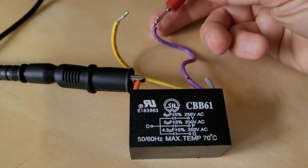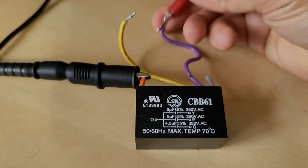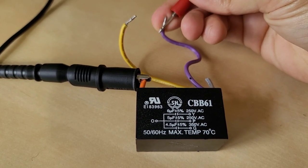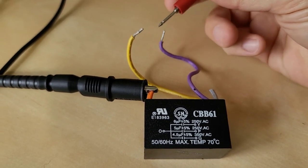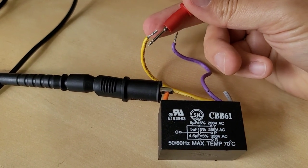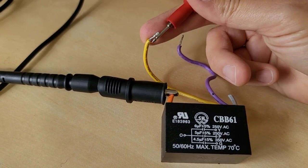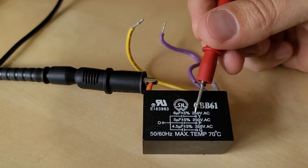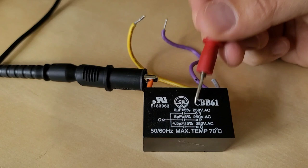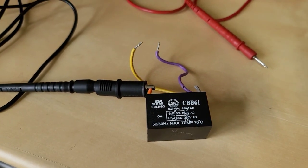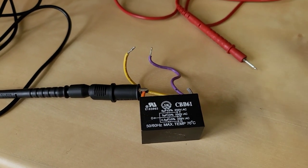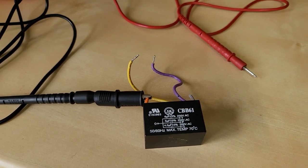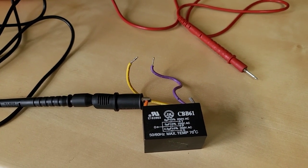I'm going to measure between the purple and orange and I'm not getting a reading either. However where yellow, the medium speed, I'm getting a dead short. So that's telling me that this capacitor internally has shorted out. That explains why I was not getting medium speed. I was getting high speed, high speed, then just low speed all of a sudden and then off.